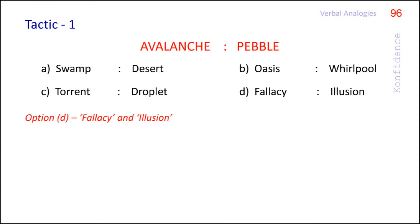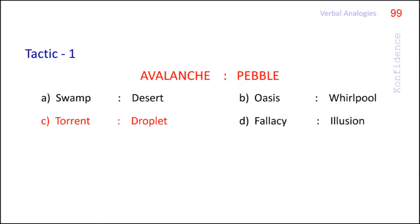Option D, fallacy and illusion are synonyms. One is not made up of the other. Hence the answer is option C, torrent and droplet.